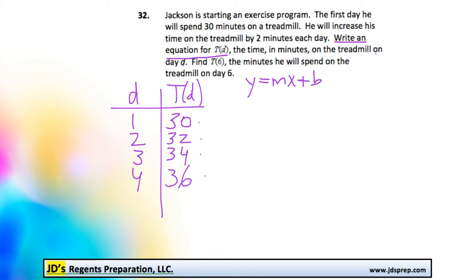Now, to find our m value, it's going to be how much our time is increasing or decreasing each time here. So you can see that it's increasing by 2 each time, and we knew that because it said that it's going 2 minutes more each day. So it's going to be 2x plus b.